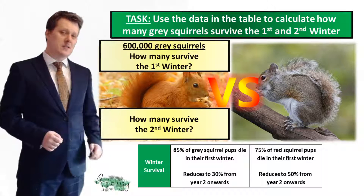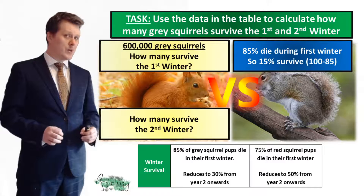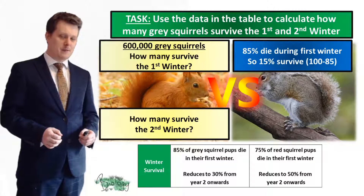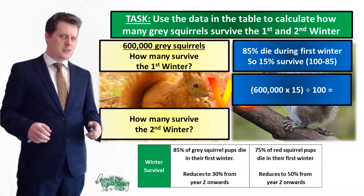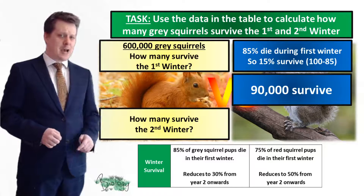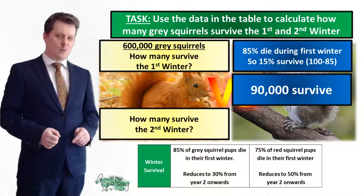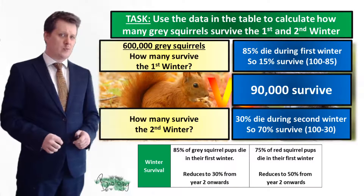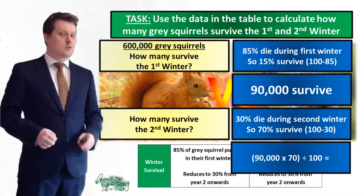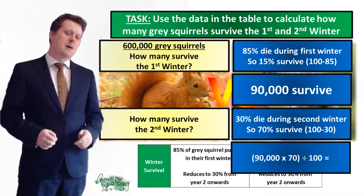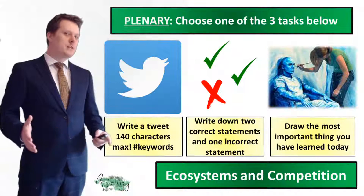Let's have a look at this population of 600,000 squirrels. In the first winter, 85% of grey squirrels will die, which means only 15% will survive. Taking 600,000 multiplied by 15, divided by 100, tells us that 90,000 squirrels will survive. How many of this 90,000 are going to survive their second winter? Only 30% of older grey squirrels die during their second winter, which means 70% survive. So 90,000 multiplied by 70, divided by 100, gives us 63,000 survivors.